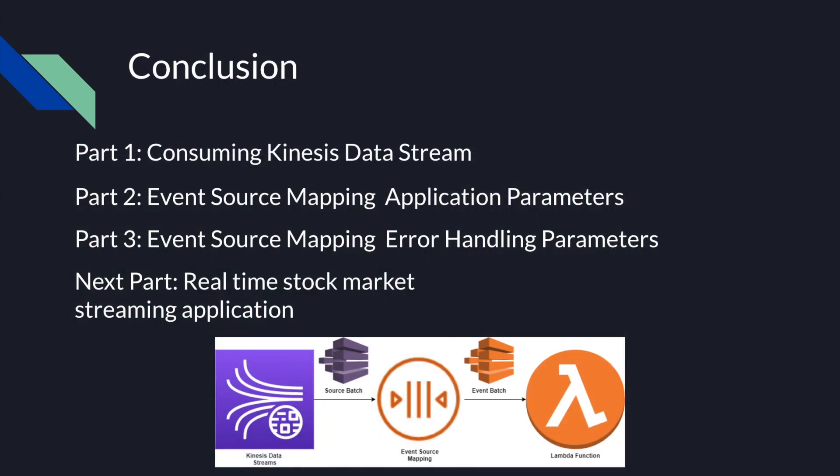That's it for the third part of my Kinesis with Lambda tutorial: error handling using event source mapping. In the next video, I'll show you a demo of a real-time stock market streaming application using the Serverless Framework. The demo will cover all the topics learned so far in this playlist, such as the two ways to consume a stream and the different event source mapping parameters. Check out other videos in this playlist to learn more about using Lambda with Kinesis. Please let me know if you have any questions down below. If you want to learn more on AWS and all types of coding-related stuff, please consider subscribing. Thanks, see you in the next video.